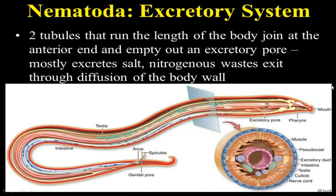The excretory system consists of two tubules running throughout the body. Both tubes are joined together and share a common excretory pore located just below the pharynx. Through this excretory pore, nitrogenous waste and excess salts are removed from the body.